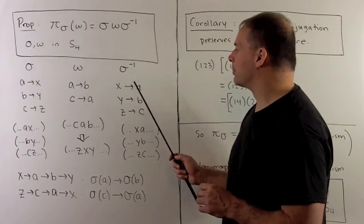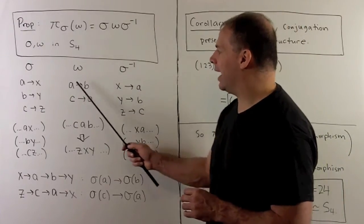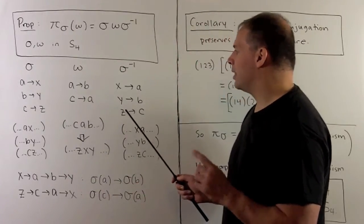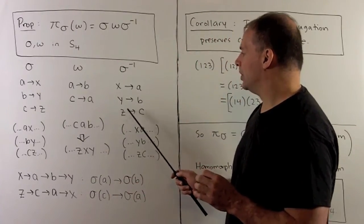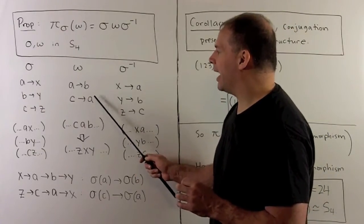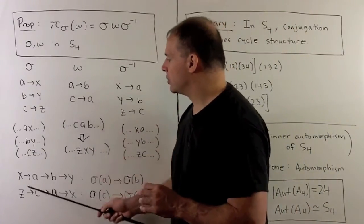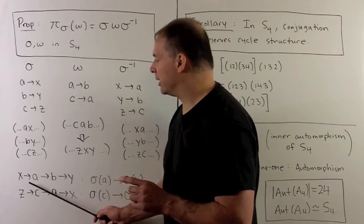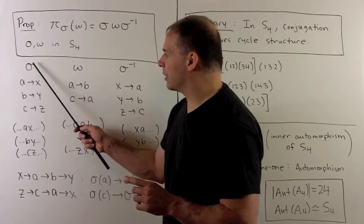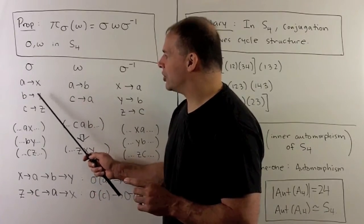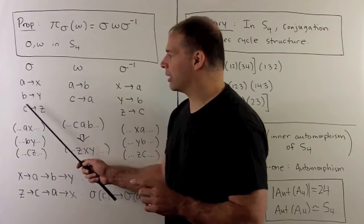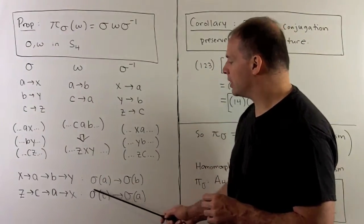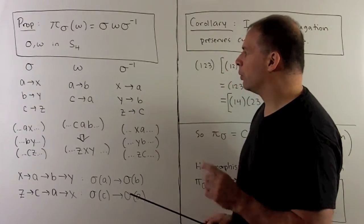If I take X, X goes to A, A goes to B, B goes to Y, so X goes to Y. Then we have Z goes to C, C goes to A, A goes to X, so Z goes to X. Now note, X is just σA, Y is just σB, Z is just σC. So we've just shown σA goes to σB, σC goes to σA, which is what we want.